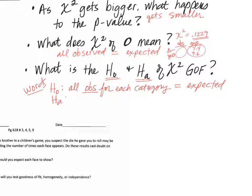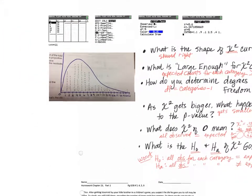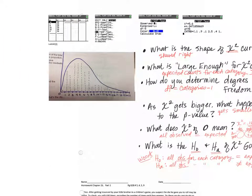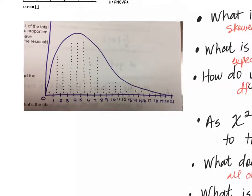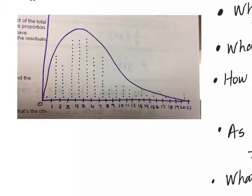Alternatively, the alternative hypothesis would be saying all of our observed for each category are not equal to what they are expected or claimed to be. Now, I wanted to show you a picture. One of my students took what I wrote on the board kind of sloppily and drew it better.